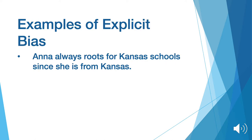Examples of explicit bias would include how Anna always roots for Kansas schools since she is from Kansas. This is explicit bias because Anna is aware that she prefers Kansas schools over other state schools.